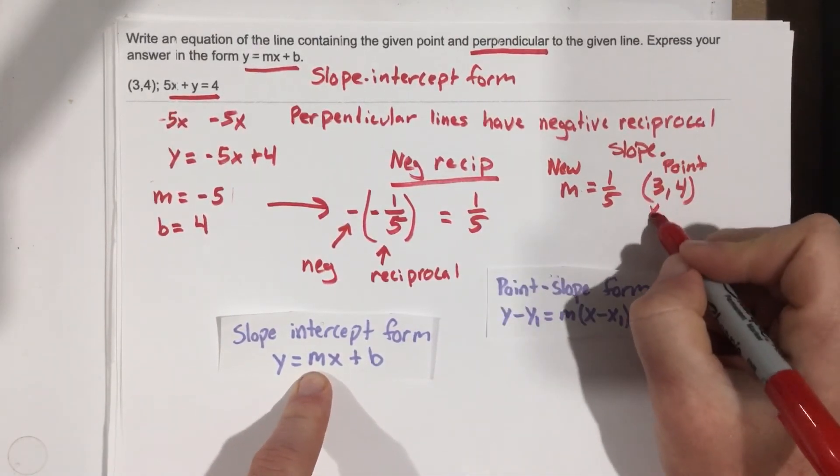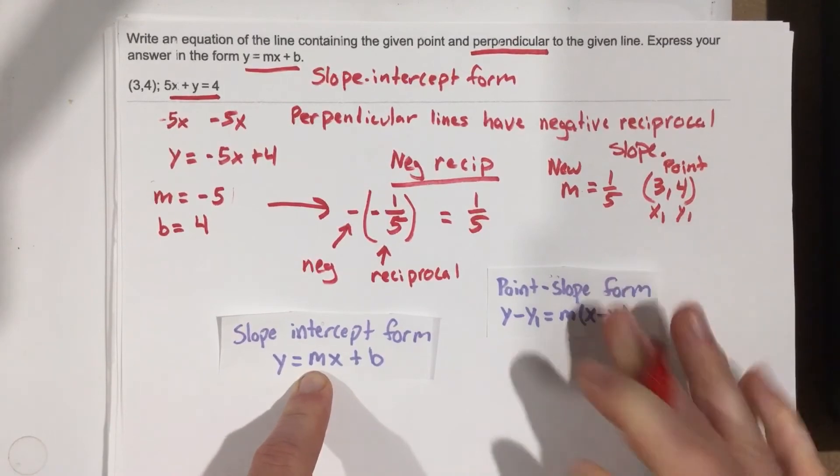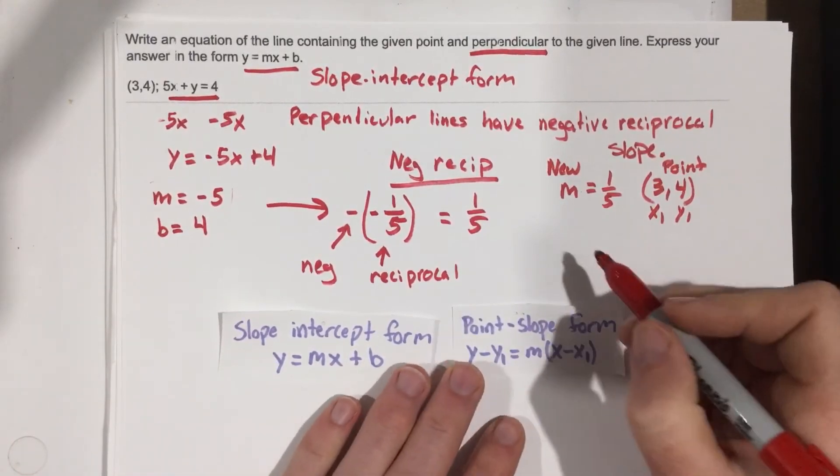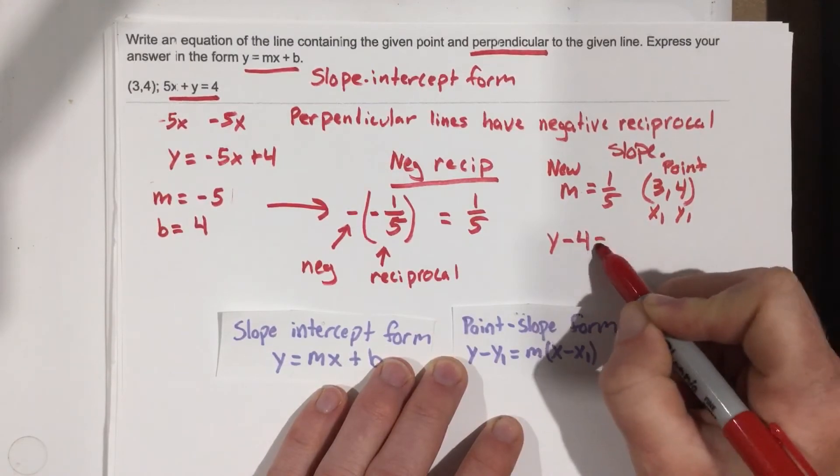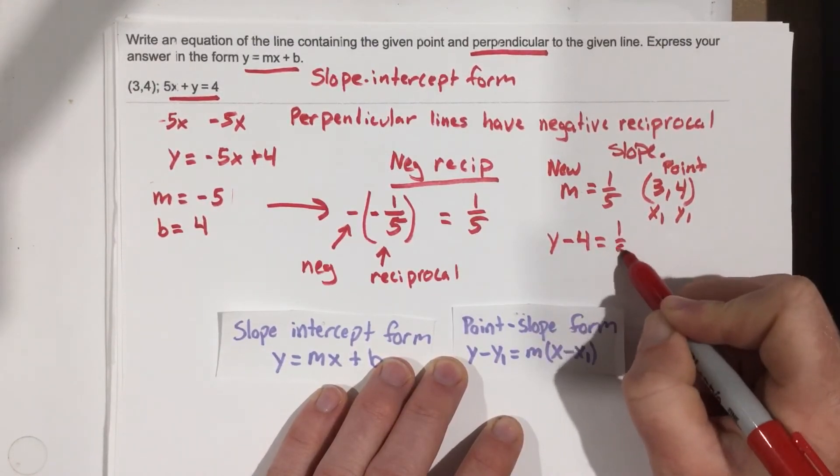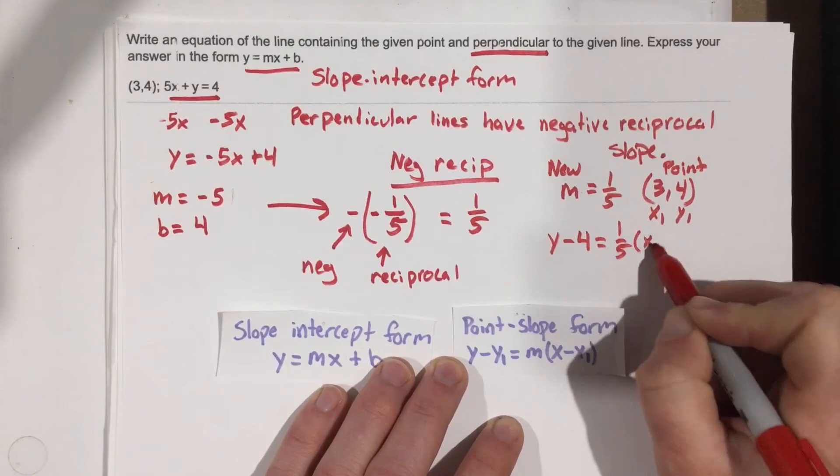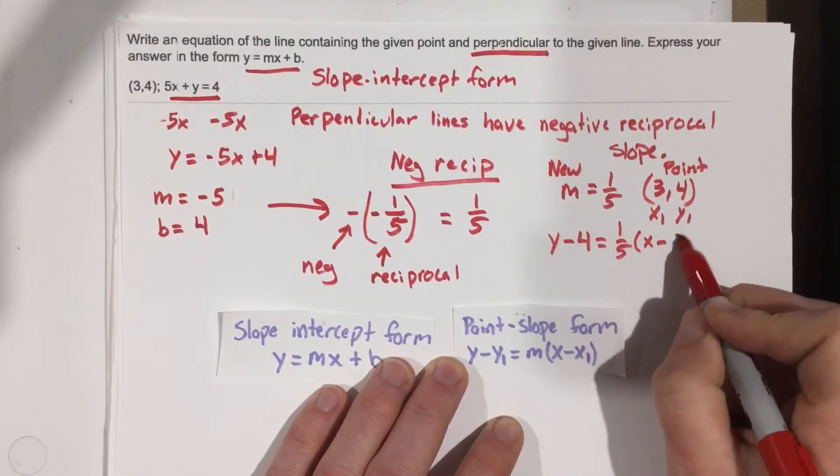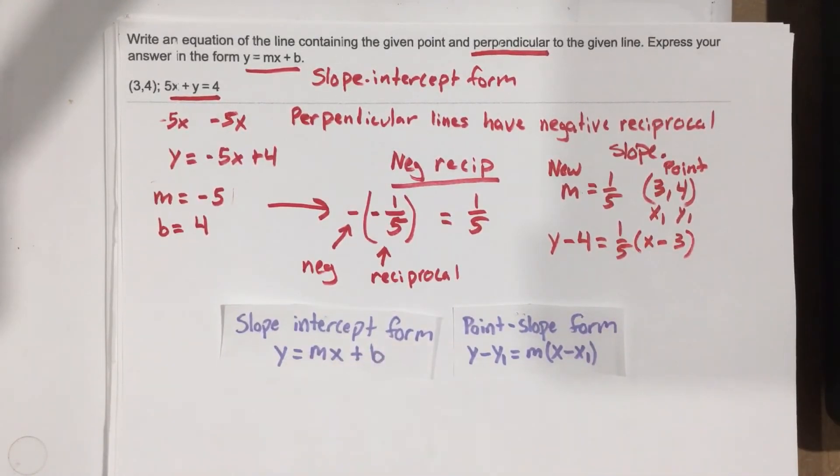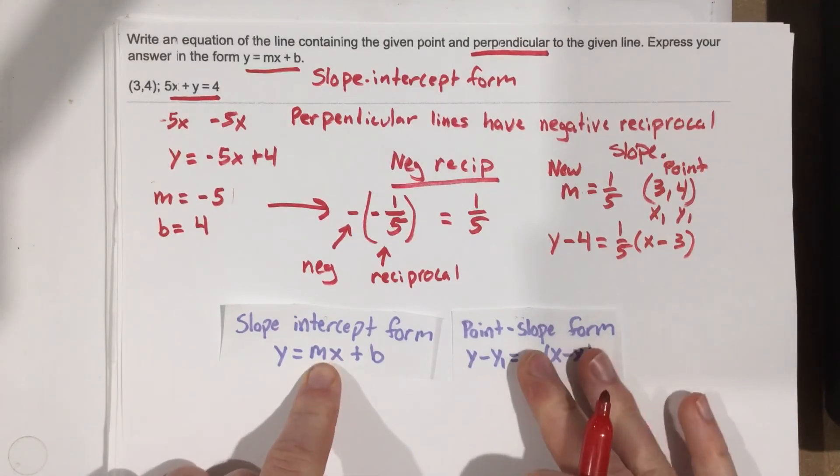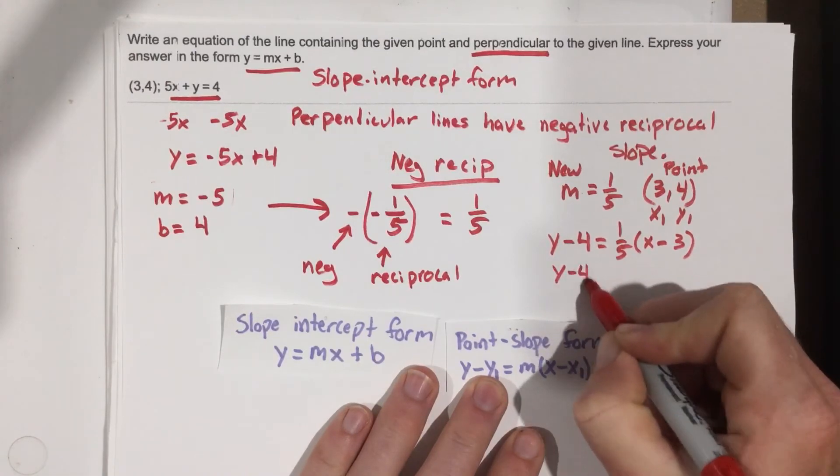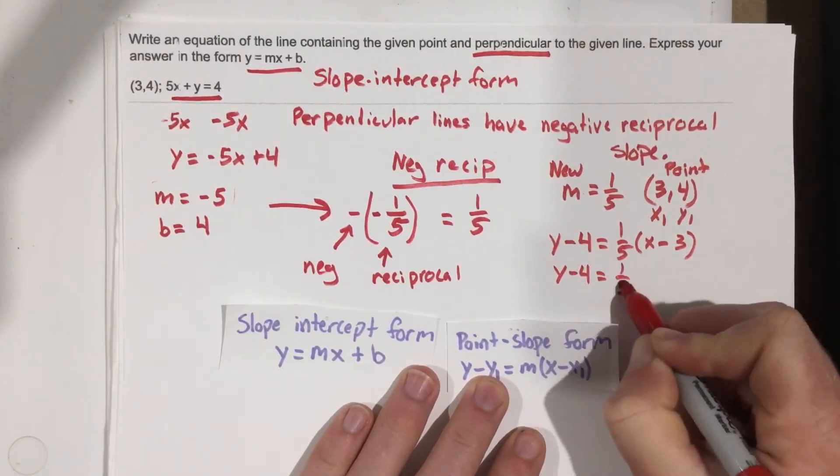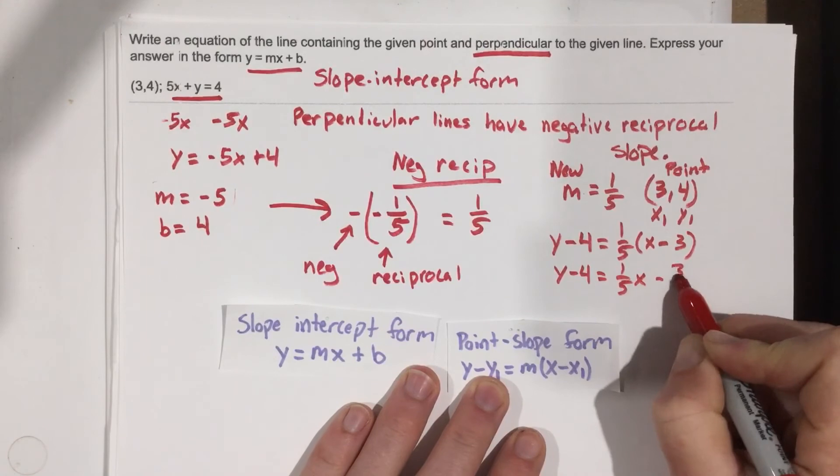I can say y minus 4 equals 1 fifth times x minus 3. Now I can go ahead and put this into slope-intercept form. So let's distribute the 1 fifth, and I get y minus 4 equals 1 fifth x minus 3 fifths.